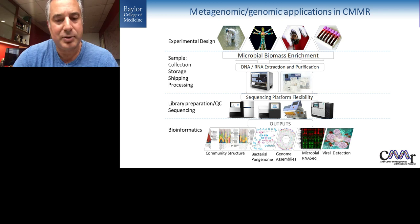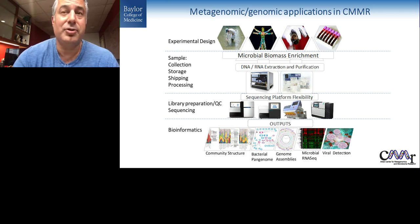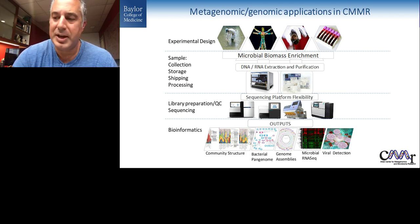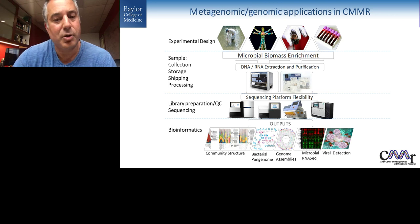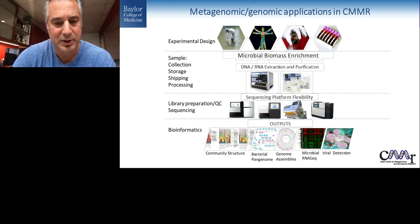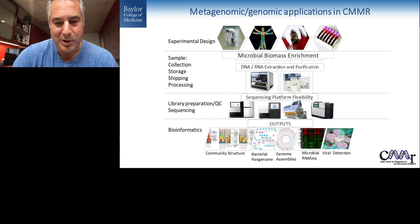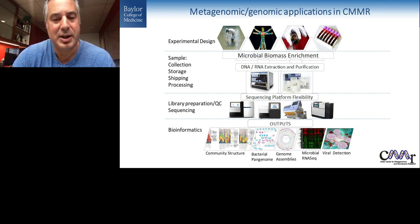Depending on the questions we want to ask, we apply a variety of bioinformatic outputs to look at what the microbial community looks like in healthy versus ill individuals, what genes are contained in those organisms, and the genetic functions encoded by them. We can assemble entire genomes from single organisms to identify specific features of a strain of interest. We can also do RNA sequencing to see not only what genes are present but which ones are turned on at a particular disease state. We've also been working hard at developing better technologies to sequence, analyze, and detect viruses from these types of samples.